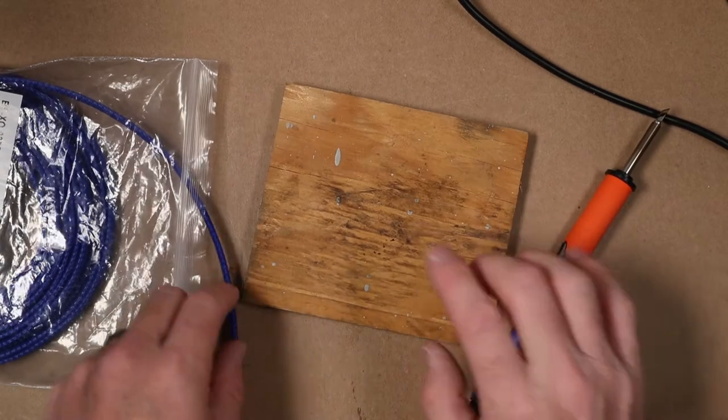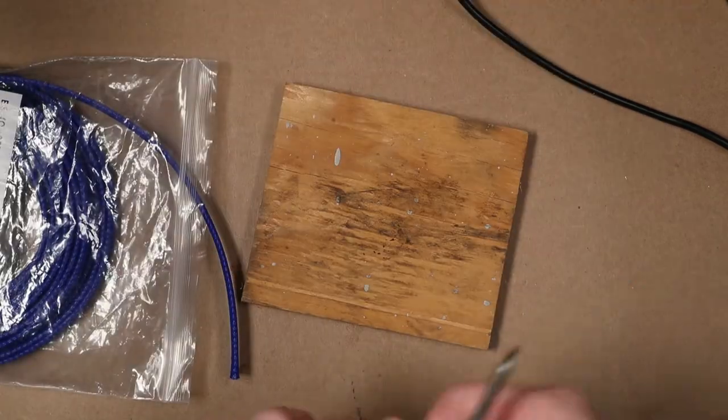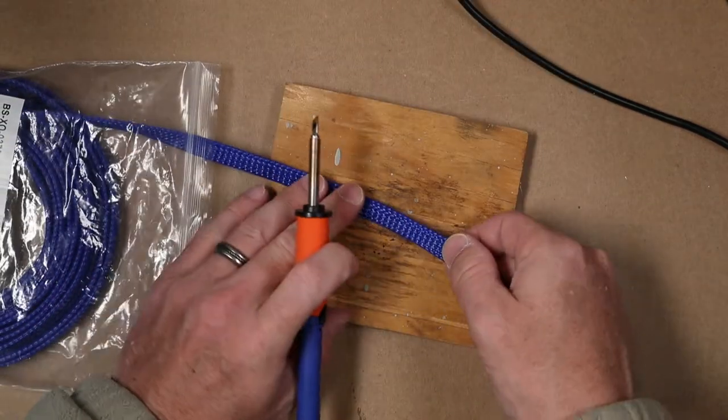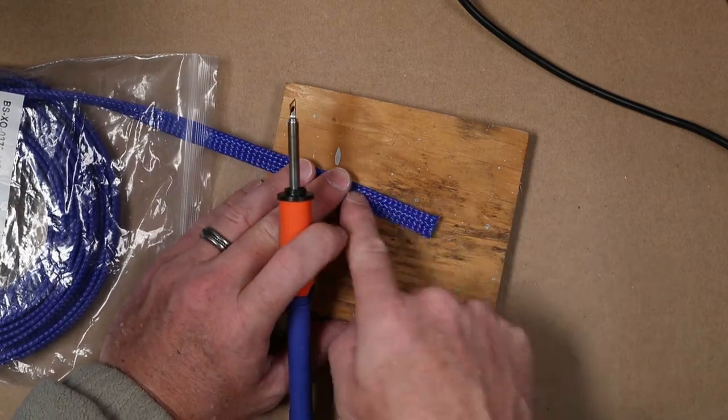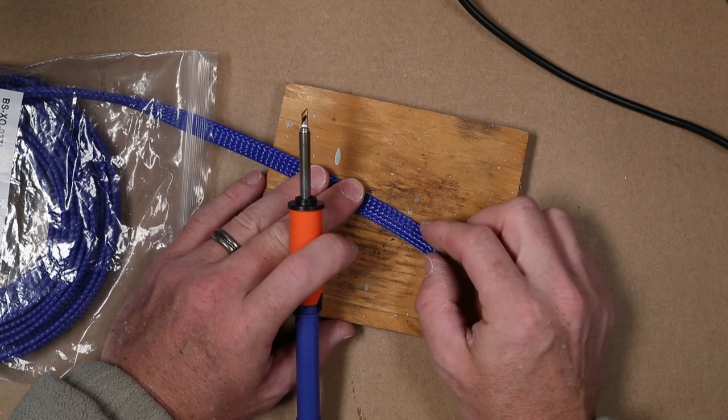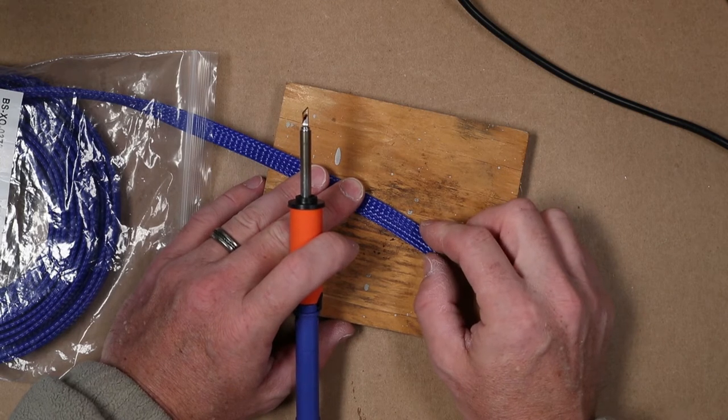I usually just grab a spare piece of plywood. I'm going to heat up the soldering iron and we're just going to put it like that. So let's say we want to cut a three-inch piece off of this. We let our iron heat up.